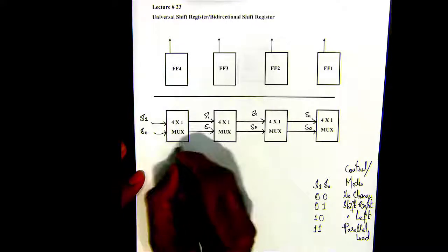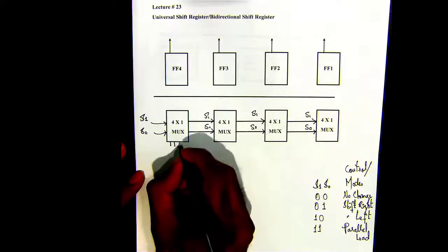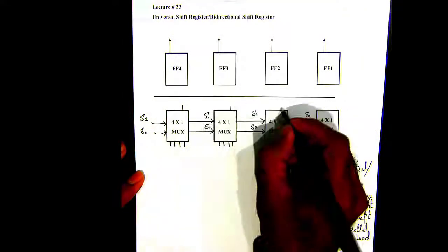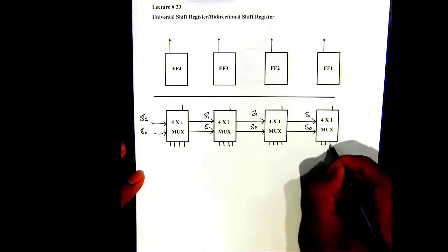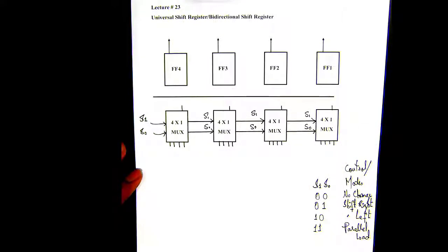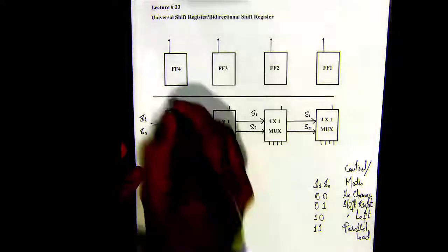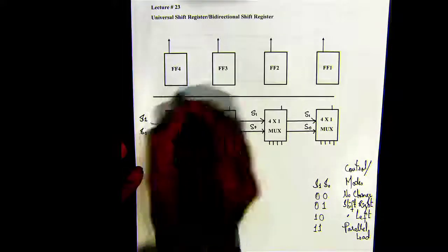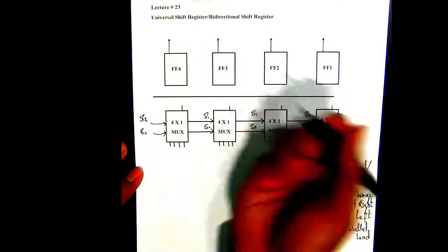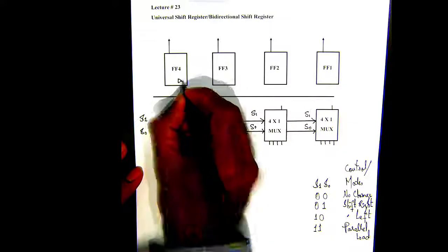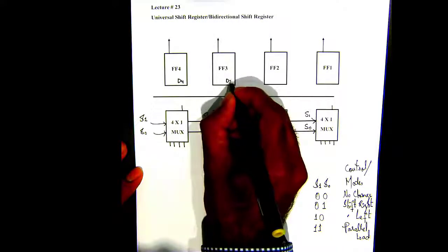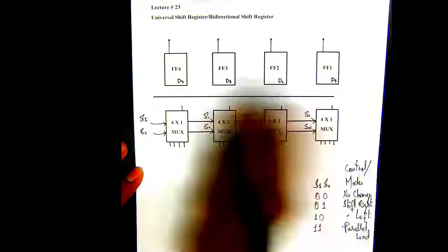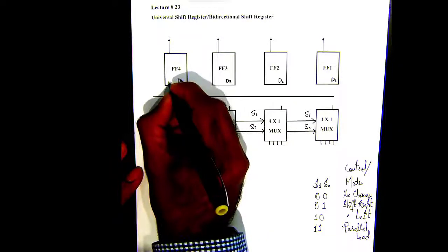And here are the inputs right here: one, two, three, four inputs. This is going to be a D flip-flop. So say this is your D4, this is your D3 input, this is your D2, this is your D1. Say this is a positive edge triggered, so you have this clock right here.